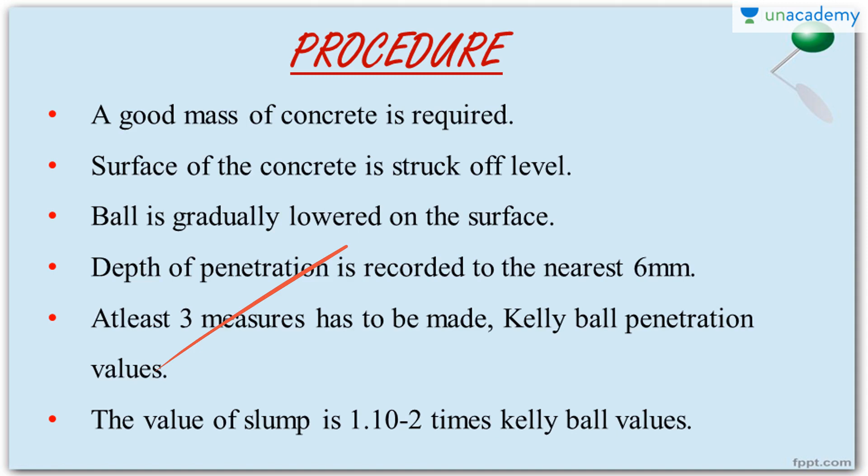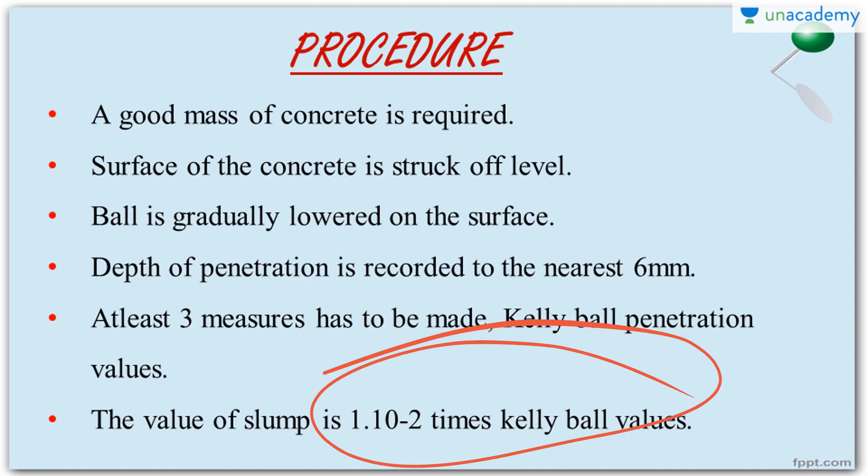There are not many standards available to interpret the results from the Indian standards perspective, so we cannot interpret the Kelly Ball test results very satisfactorily. However, from some thesis papers and experiments, researchers came to the conclusion that the slump value is 1.1 to 2 times the Kelly Ball values. Scientists tried to correlate the slump value — one of the universally accepted tests for measuring workability of fresh concrete — with the Kelly Ball value, and through trial and error arrived at this relationship.